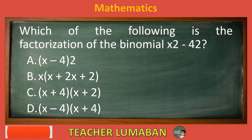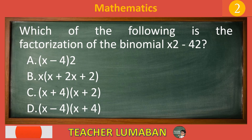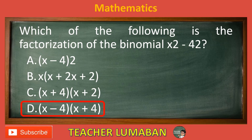Choose the suitable answer based on the given choices in 5 seconds. 5, 4, 3, 2, 1. The correct answer is letter D: (X minus 4)(X plus 4). The factorization of the binomial X² minus 4² is (X minus 4)(X plus 4).